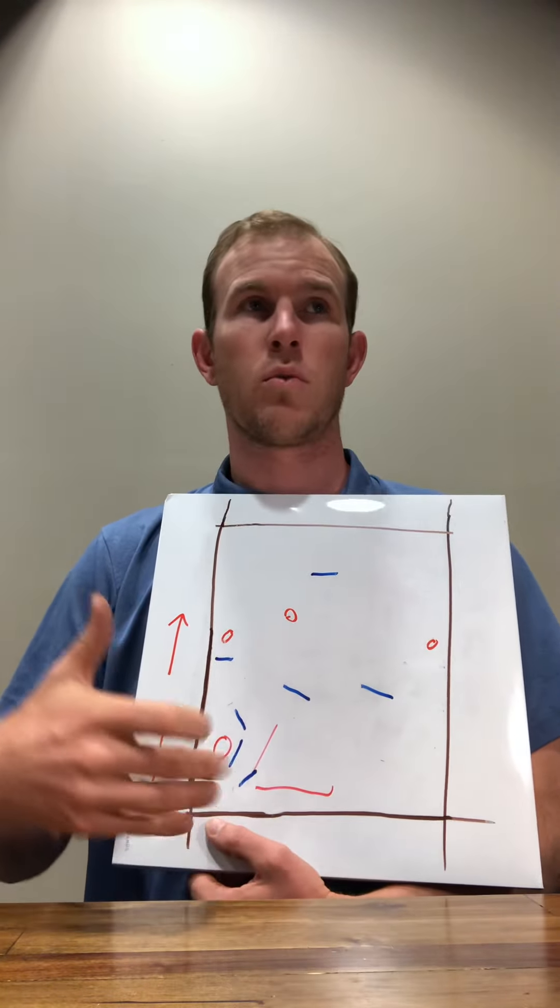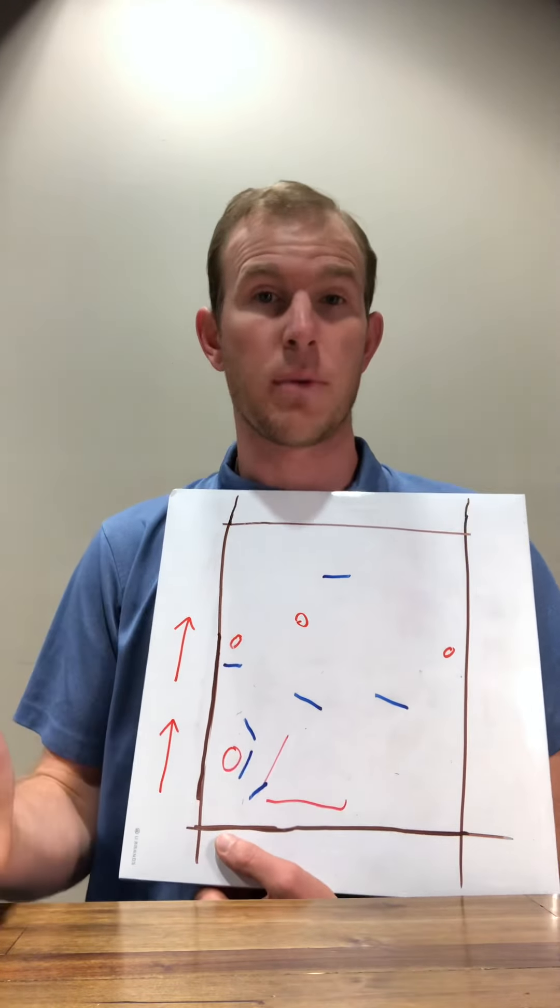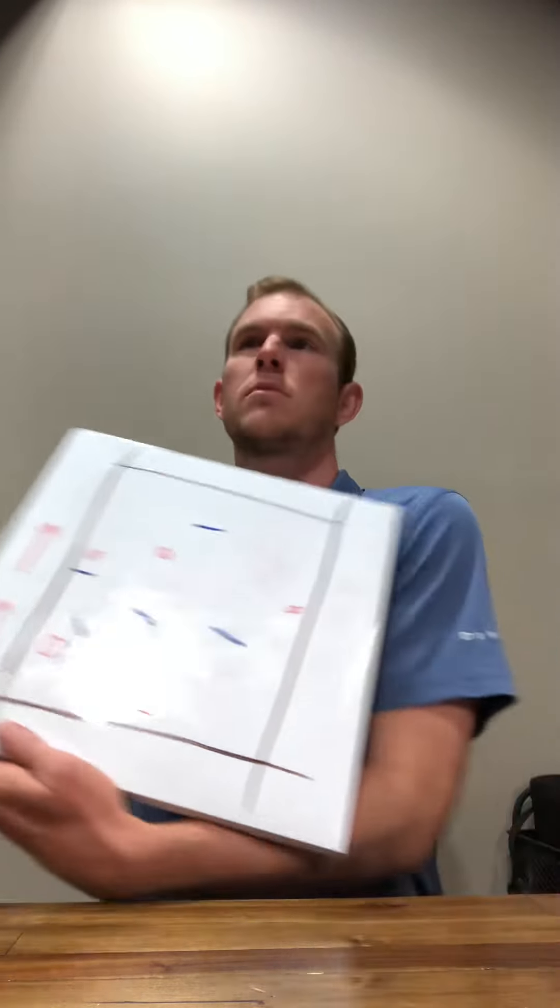And then that option for, when we're forcing middle, and we get to a sideline, we all of a sudden are trapping the sideline, and they have no dump option. It's just a way to keep offenses from getting into too much of a rhythm. And it just usually will throw them, and give us a quick turn here and there.